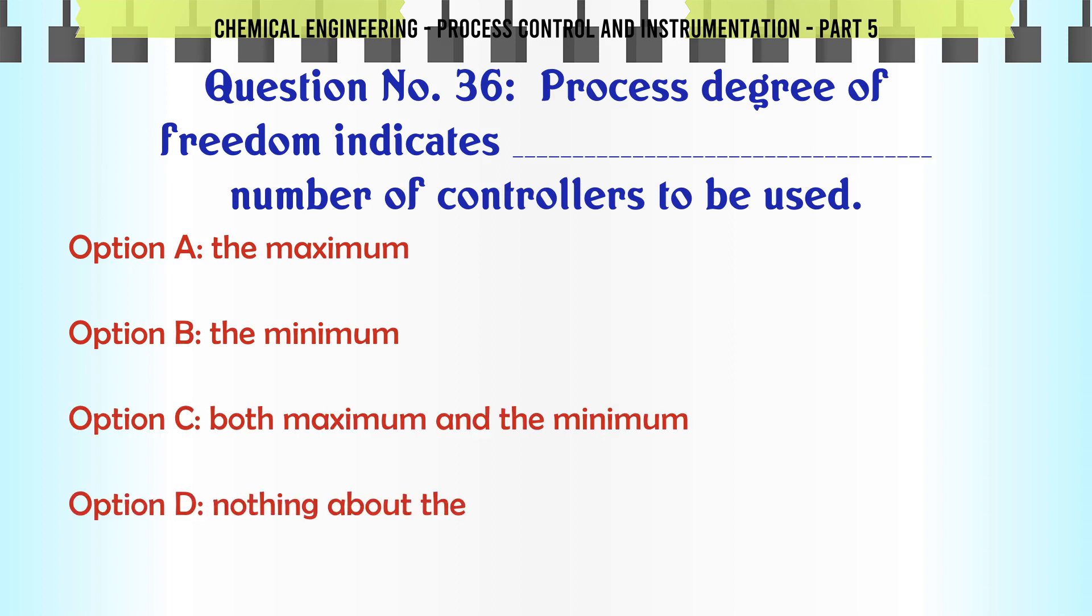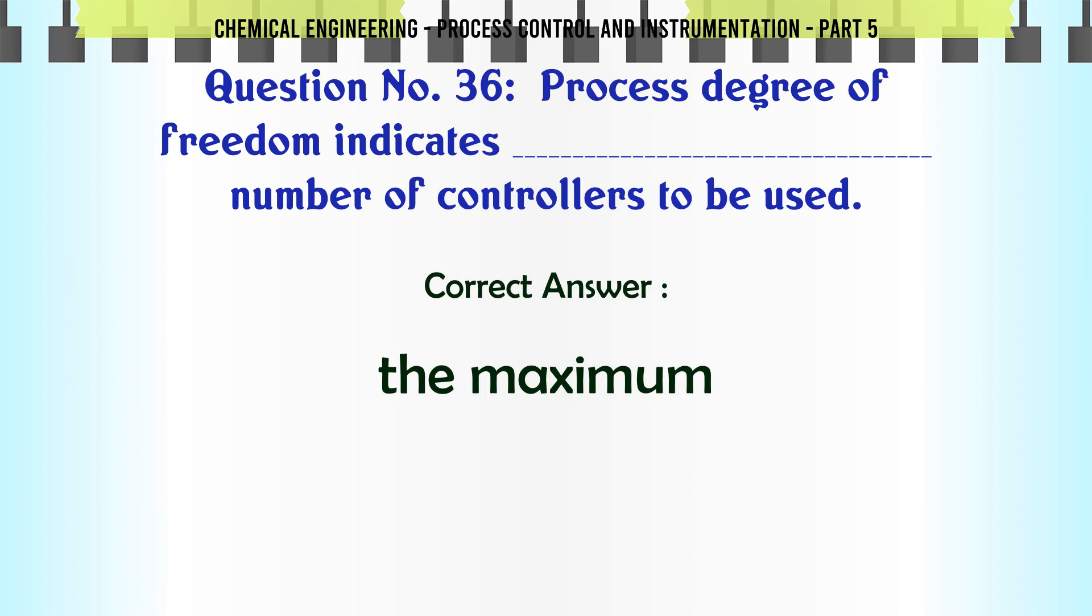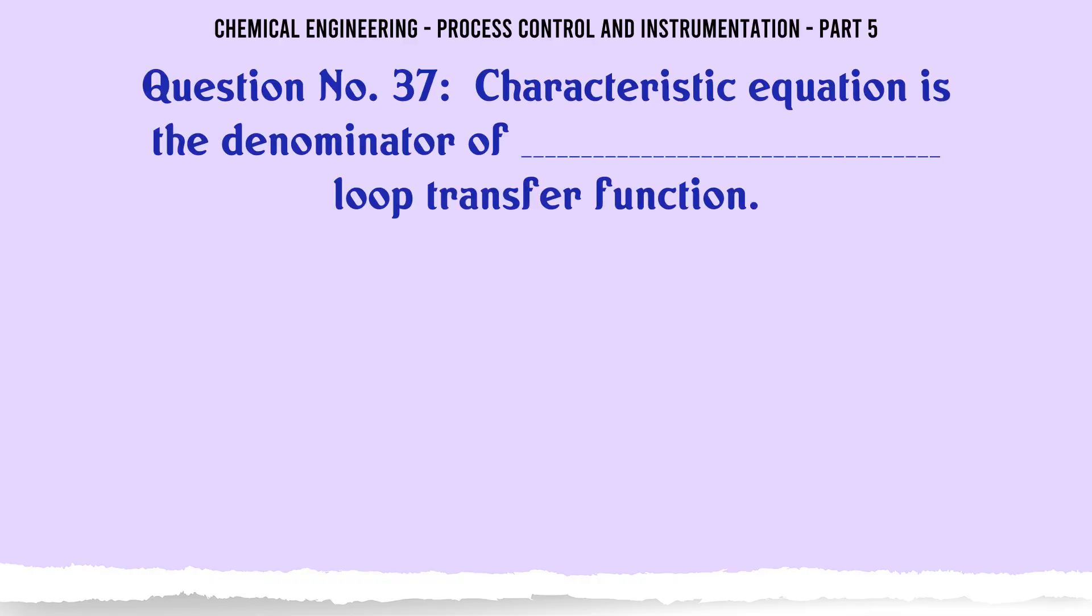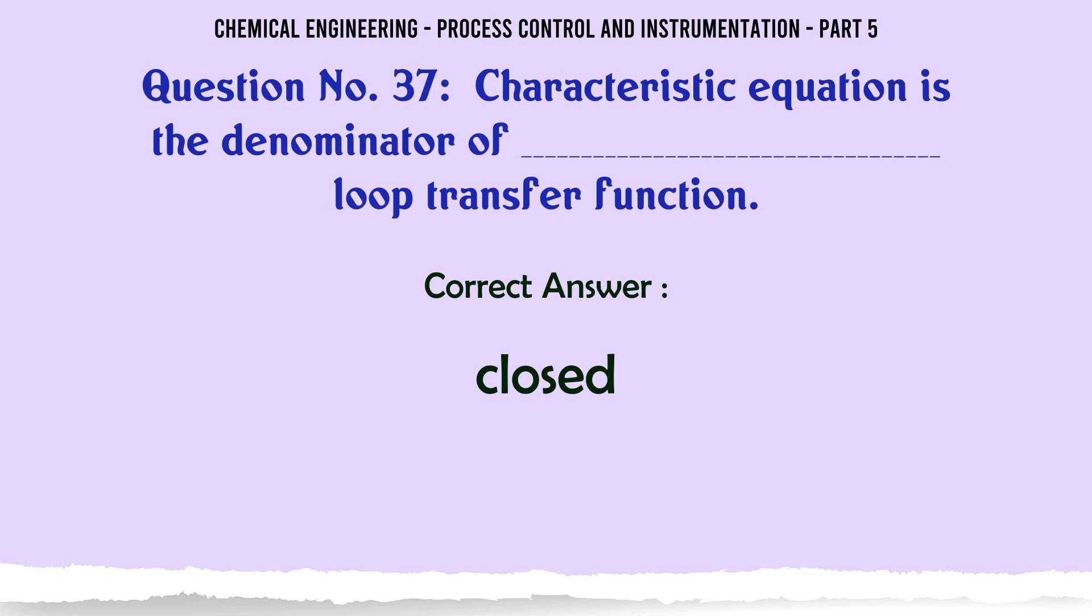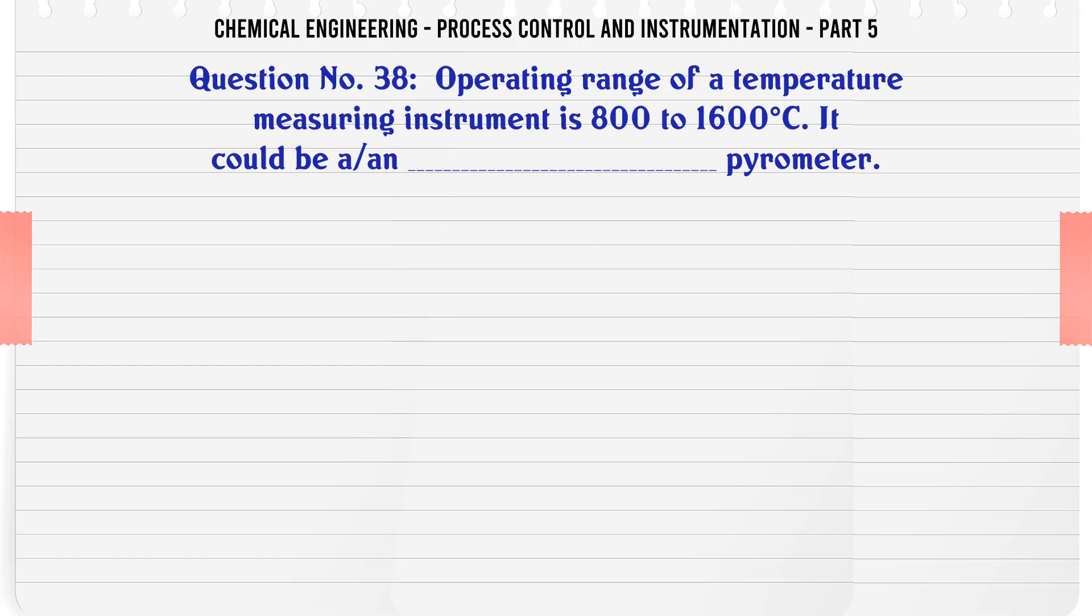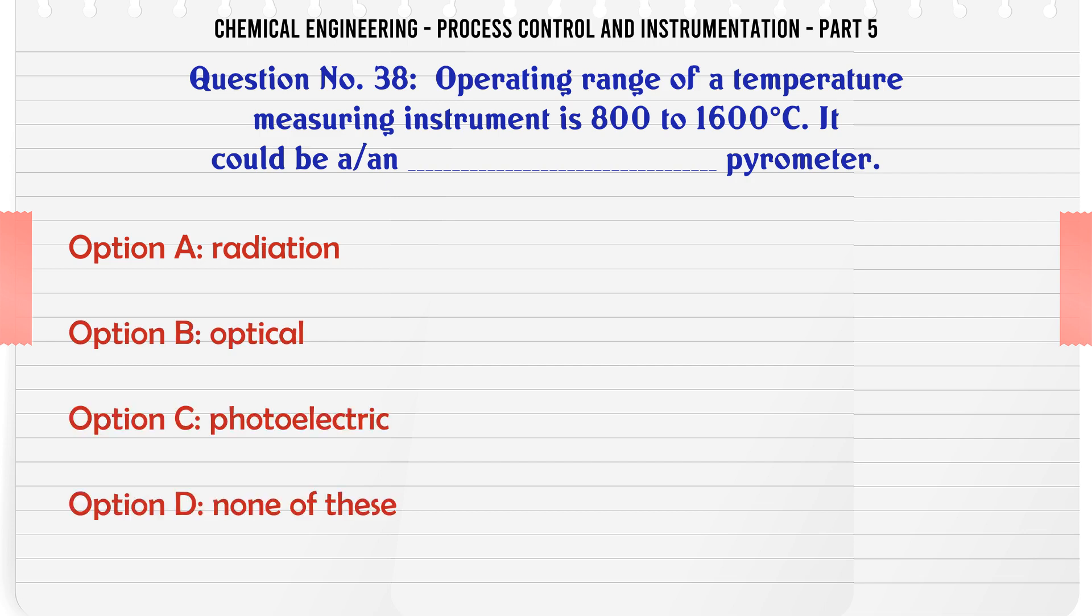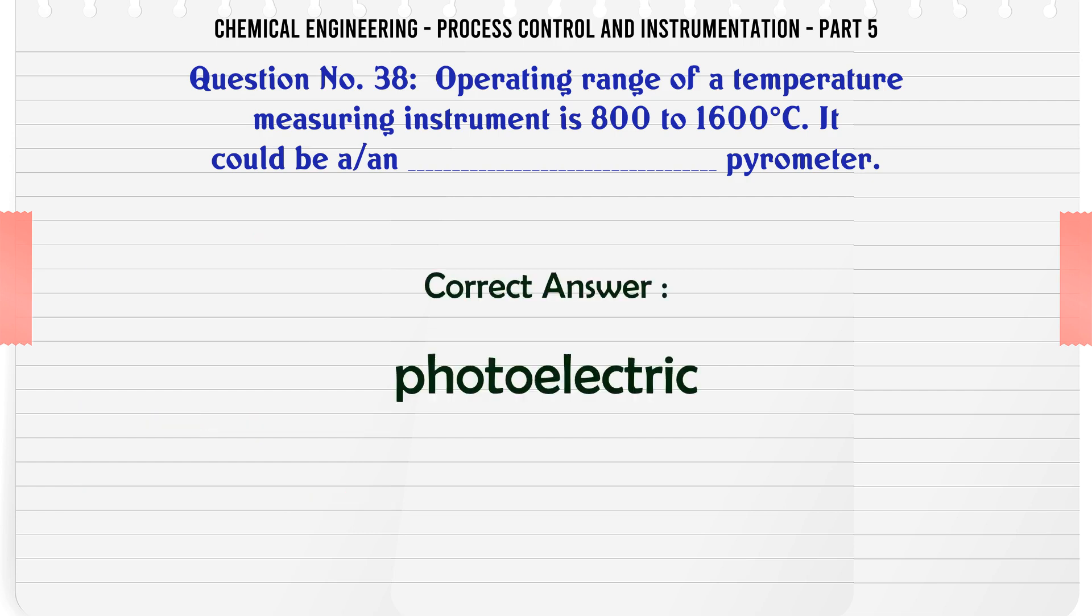A. The maximum. B. The minimum. C. Both maximum and the minimum. D. Nothing about the. The correct answer is The maximum. Characteristic equation is the denominator of loop transfer function: A. Open. B. Closed. C. Both A and B. D. Neither A nor B. The correct answer is Closed.